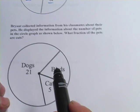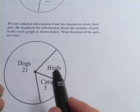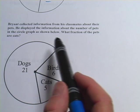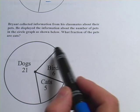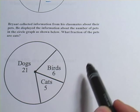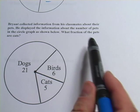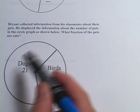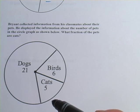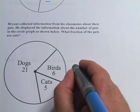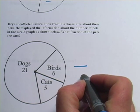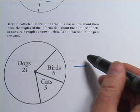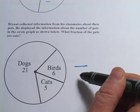Let's try one more. Bryant collected information from his classmates about their pets. He displayed the information about the number of pets in a circle graph as shown below. Which fraction of the pets are cats? Now, the whole pie represents all pets. So when we're talking about a fraction of that pie, it's going to be the total pie on the bottom and the number of cats on the top — showing cats out of the whole number of pets.